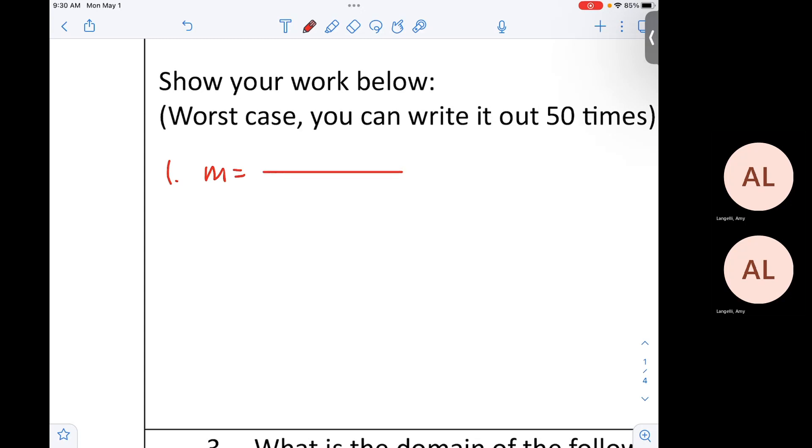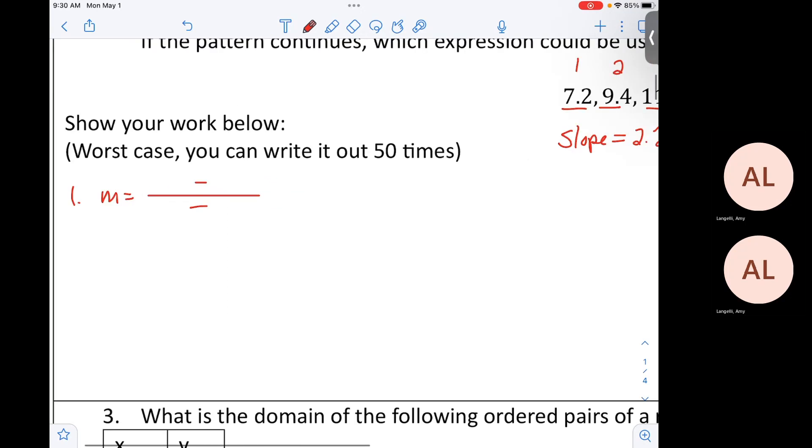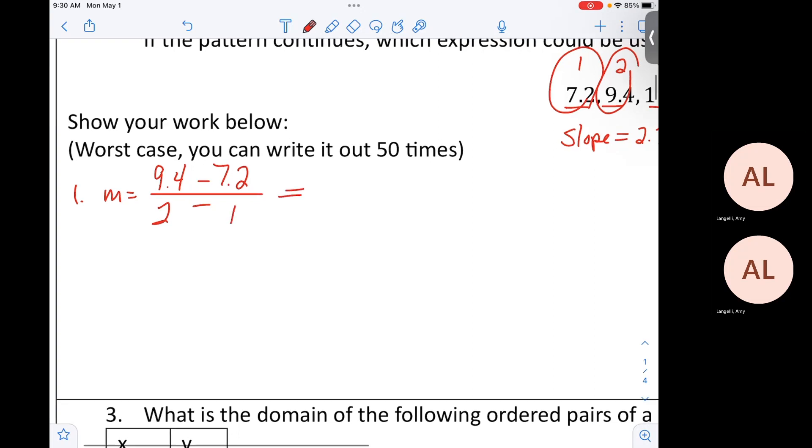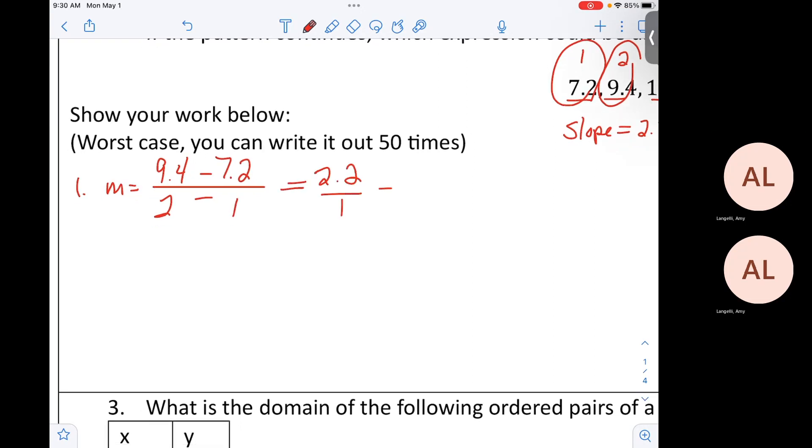Let's say that you have no idea how to find the slope. You set your slope up like this. You do 9.4 takeaway 7.2. And then what else? Since 9.4 is at spot two, you would do two, take away one. And that would be 2.2 over one, which proves the 2.2 you found at the beginning.